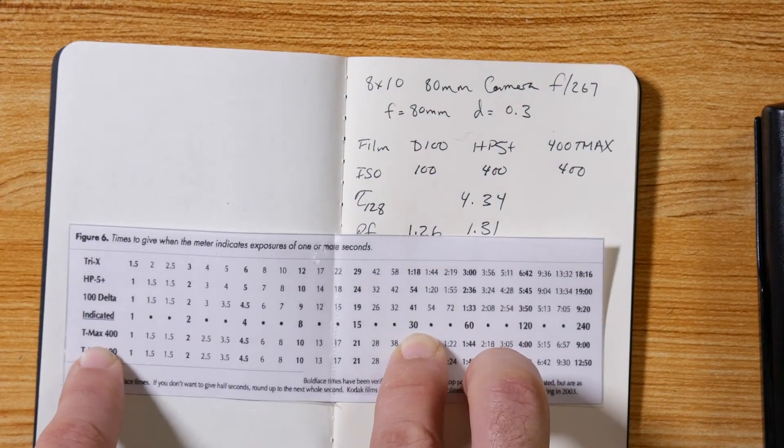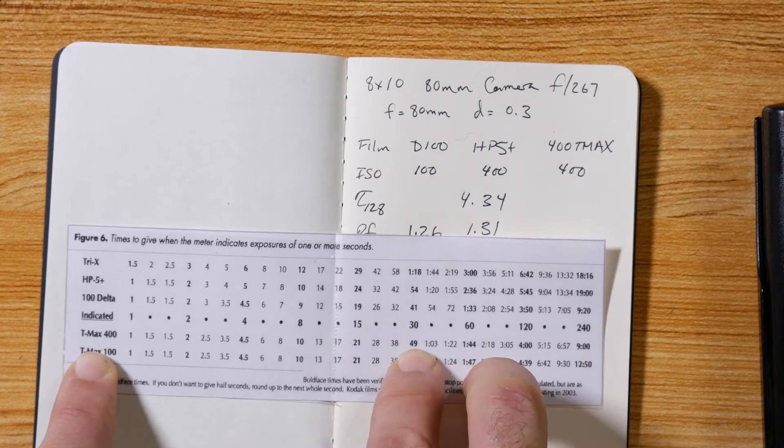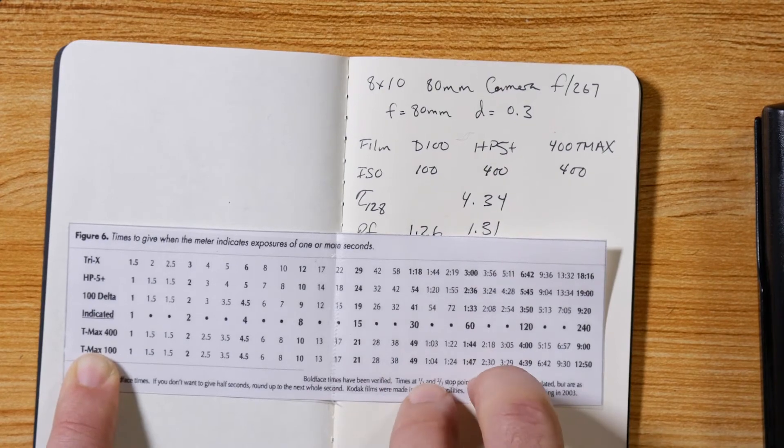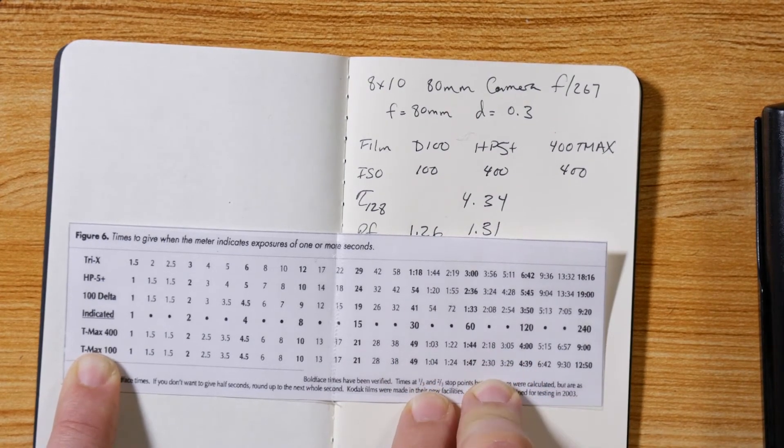So let's say I had an exposure, a metered time for T-max at 30 seconds. I go to T-max 400 right here and I find out that I actually have to have an exposure of 49 seconds. So I can use this handy-dandy chart. Again, this is not a substitute for independent verification, but it's a good start.